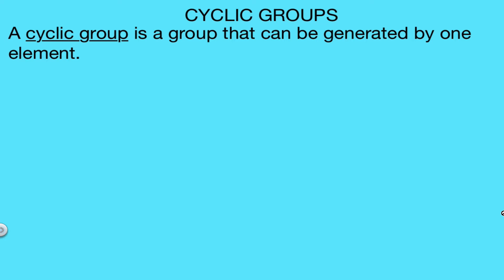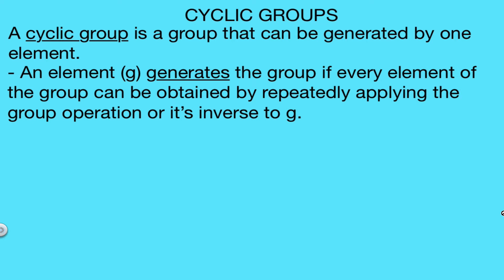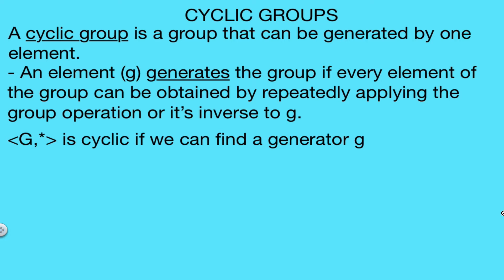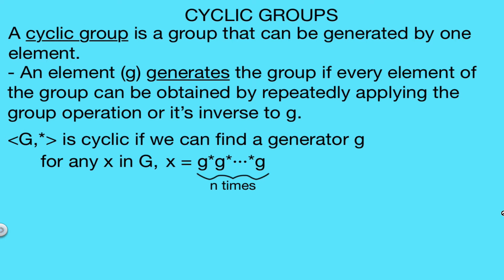What does it mean that a group can be generated by one element? We say an element, which we'll call g, generates the group if every element of the group can be obtained by repeatedly applying the group operation or its inverse to the element g. So if we have a group G with binary operation star, we say that this is cyclic if we can find a generator g, meaning for any element x in G, we can write x entirely in terms of our generator g. Applying the binary operation star to g some number n times gives us our element x.